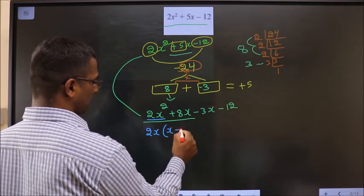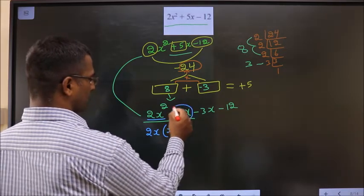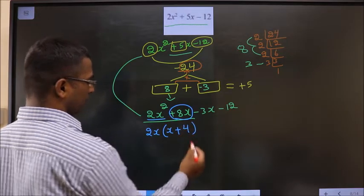So, from here 2x is gone outside, leaving with x. Here also 2x taken common, so leaving 4.